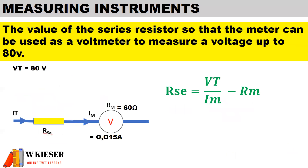For the series resistor, so that the meter can be used as a voltmeter to measure voltage up to 80 volts, the voltmeter ranges from 0 to 80 volts. To measure voltage we want to protect the voltmeter, and the only way to divide voltage is to have a series circuit. Therefore the total voltage will be the sum of the volt drop across the series resistor and the volt drop across the meter.